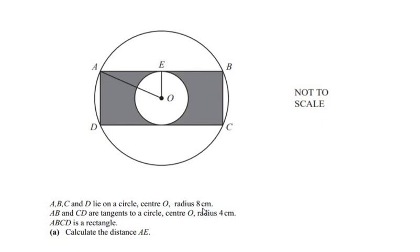The radius of the outer circle is given as 8 centimeters, from point O to point A. AB and CD are tangents to a smaller circle with center O — AB touches the circle at point E, and CD also touches it. The radius of that inner circle is 4 centimeters, from point O to point E. ABCD is a rectangle.